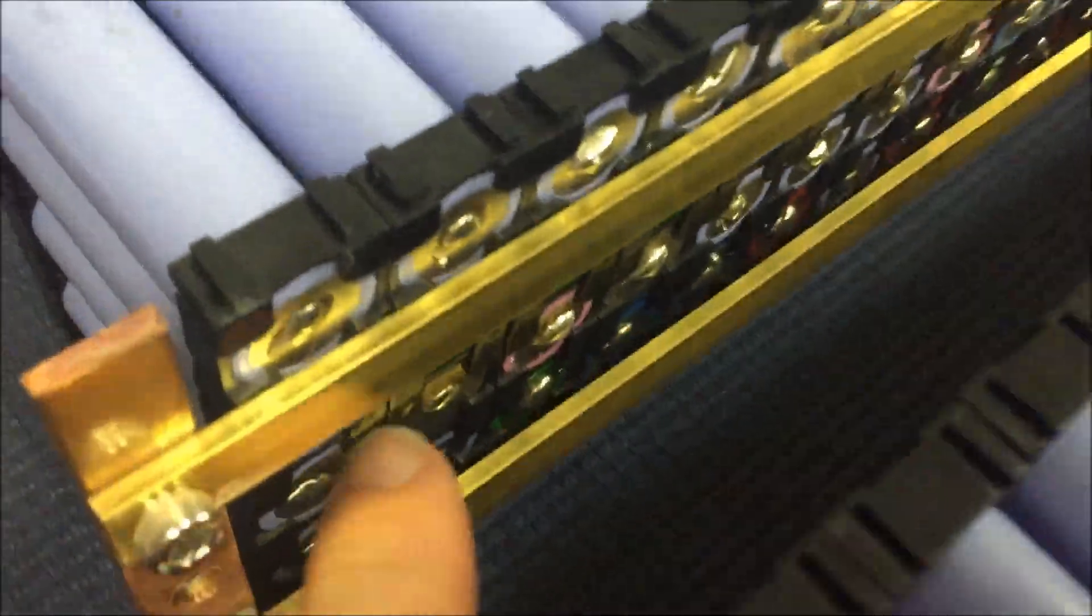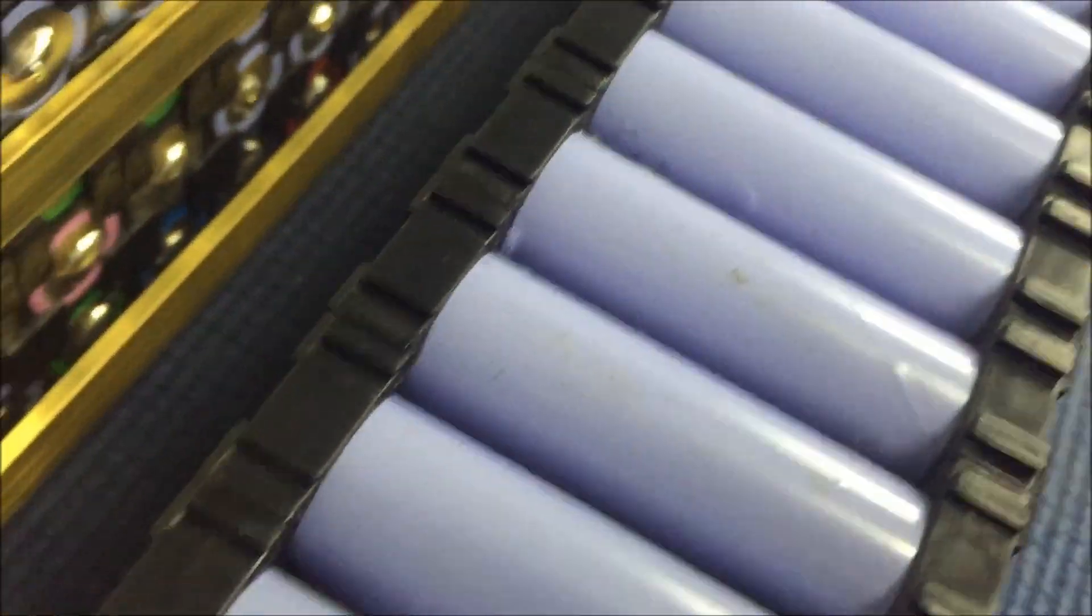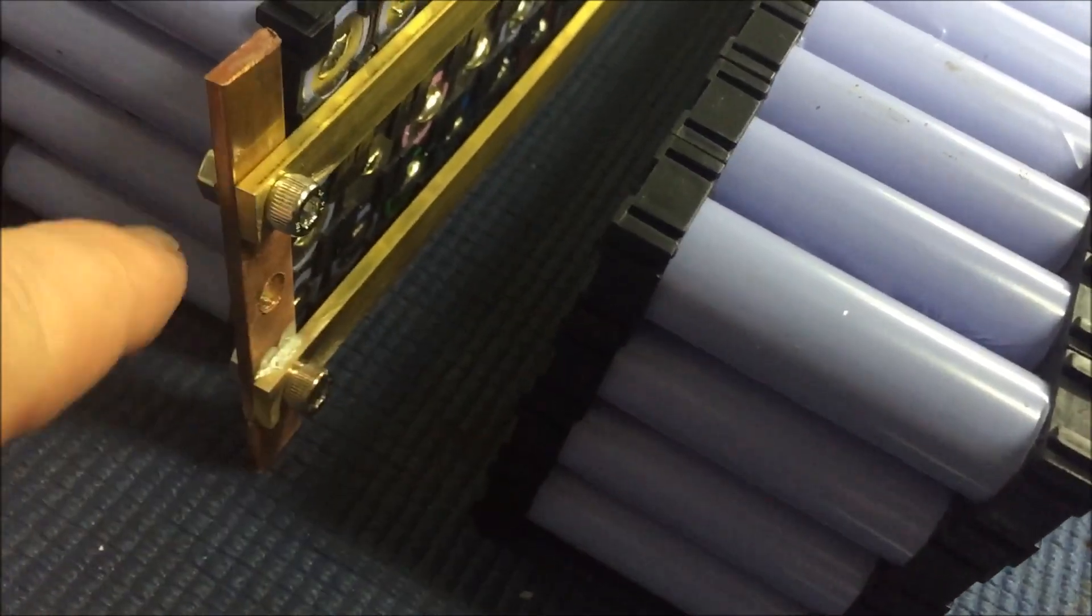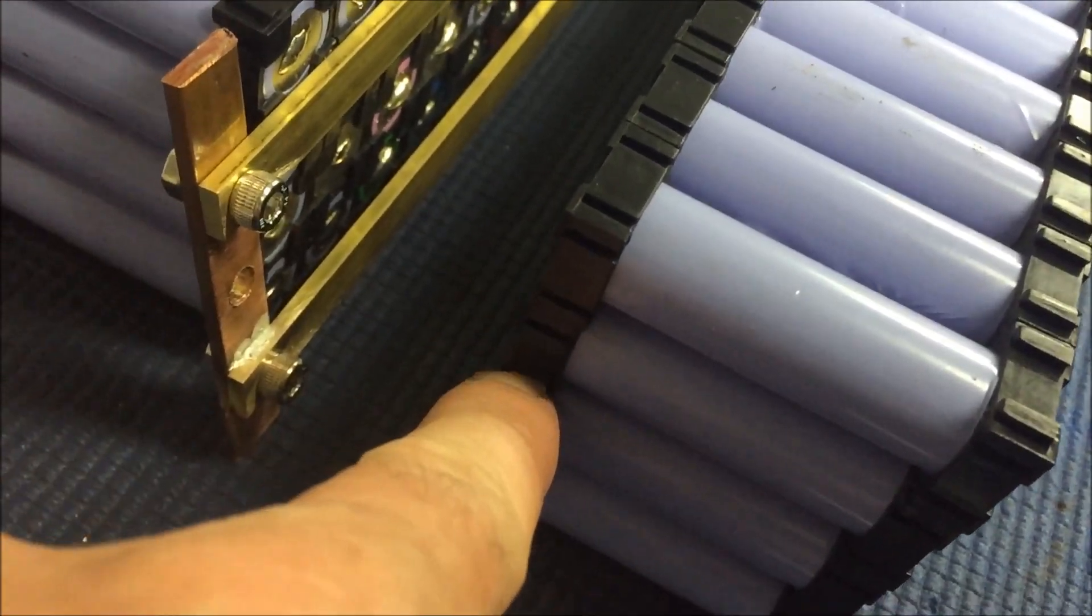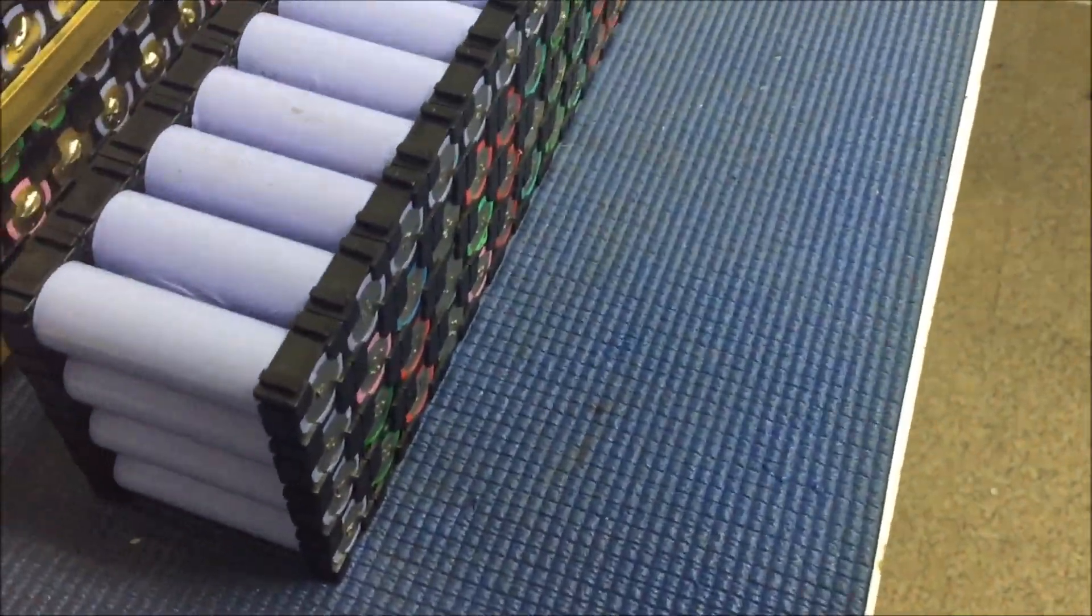The one beside it, so we've got negative there and positive on that side. So basically I'll just have a cable that loops around and then connects up to that. So negative positive, negative positive, negative positive, and so on and so forth.